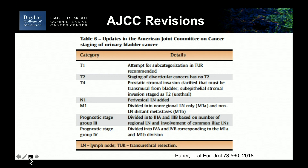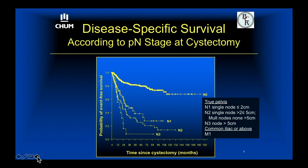There have been some revisions to the most current staging system. The last edition was 2010; the current edition was published in 2018. Involvement of common iliac lymph nodes has now pushed the patient back into group three, where it was always in group four. That matters really in the context of clinical trials and trying to develop effect sizes for randomized clinical trials.